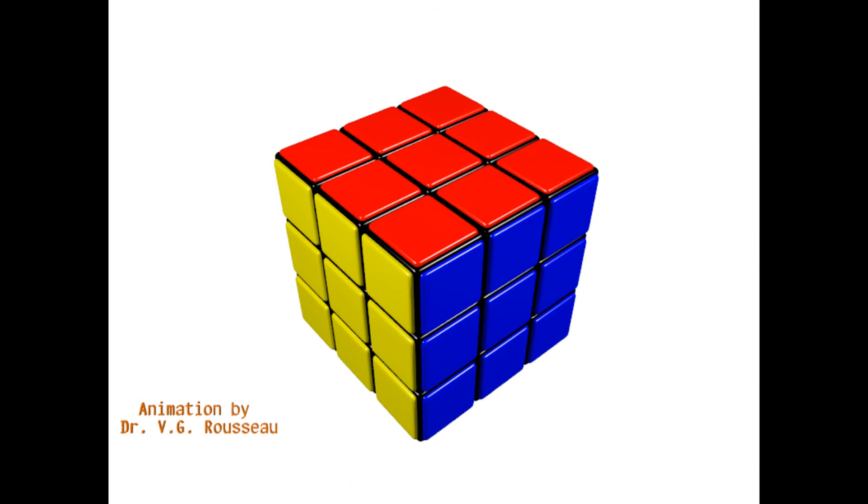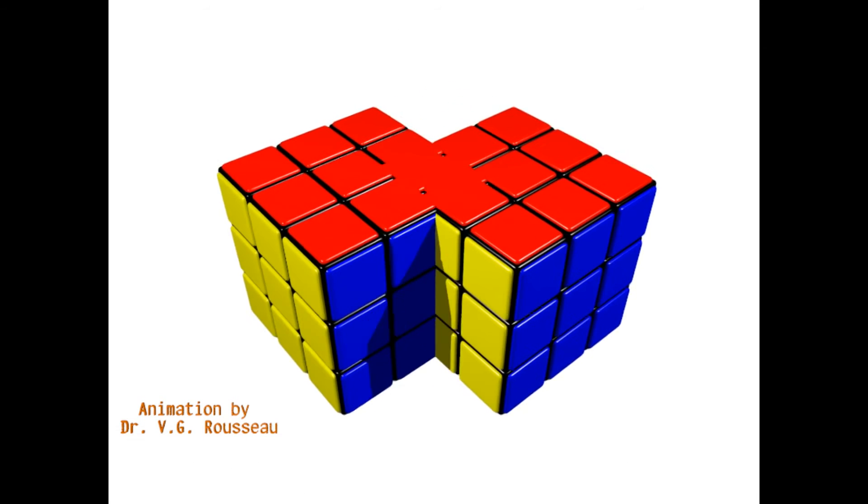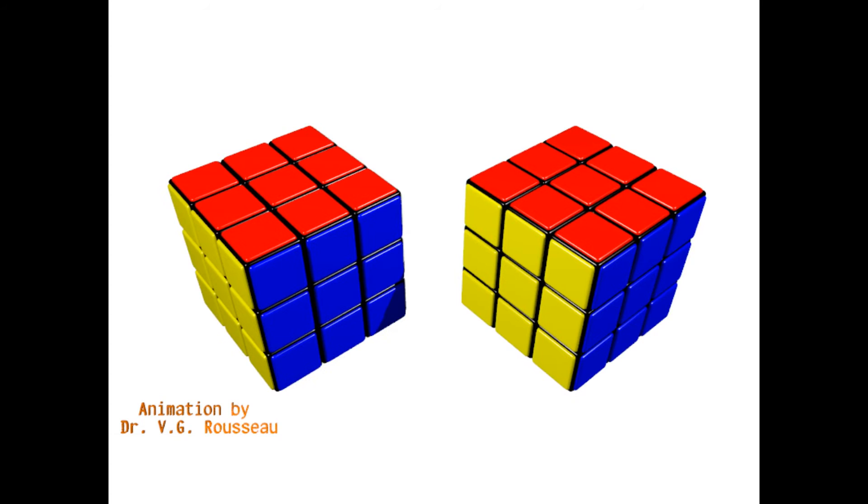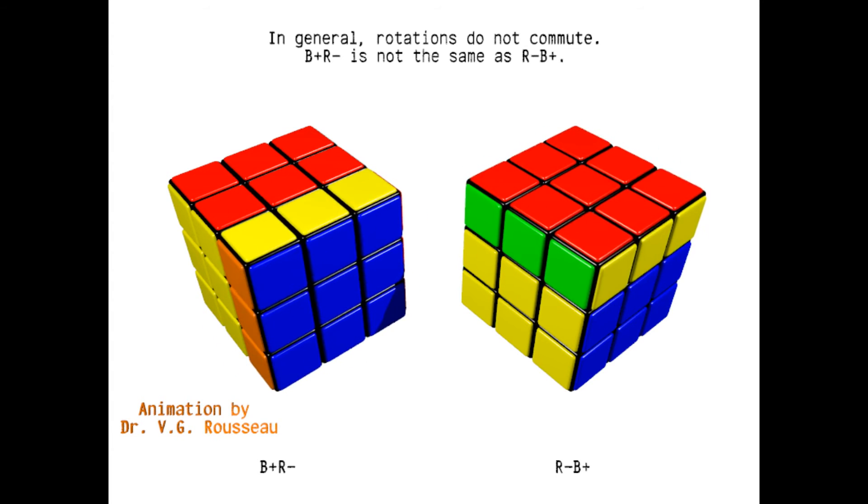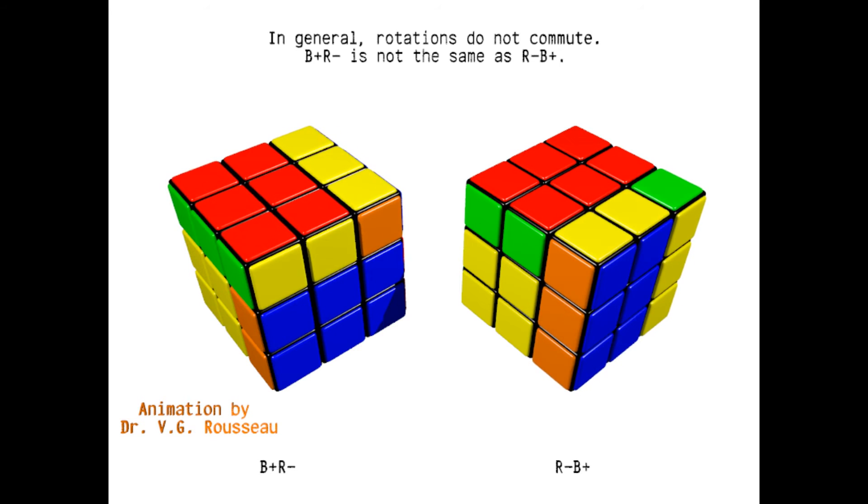Something that is crucial to keep in mind when solving the cube is that rotations do not commute in general. This means that, for example, rotating the blue face clockwise, then the red face counterclockwise, does not produce the same result as rotating the red face counterclockwise first, then the blue face clockwise. You can see that the results are different. With these definitions, we are now ready to solve the cube.